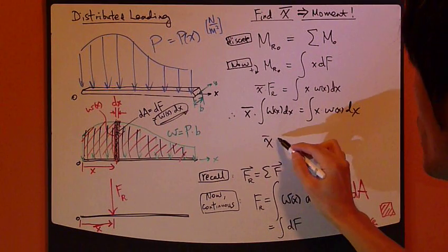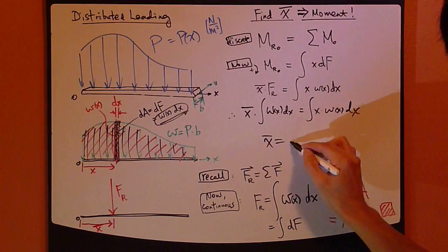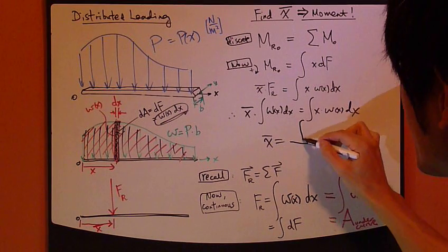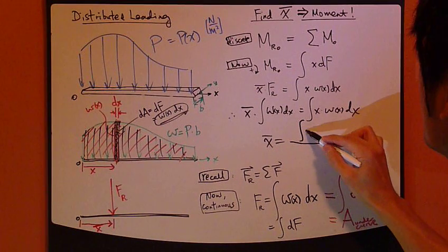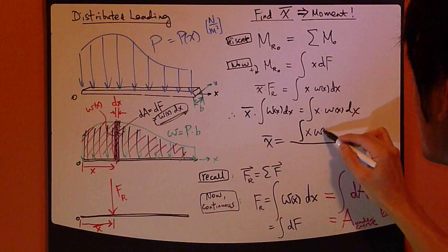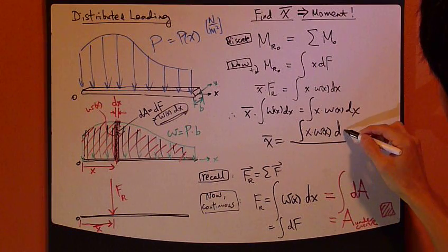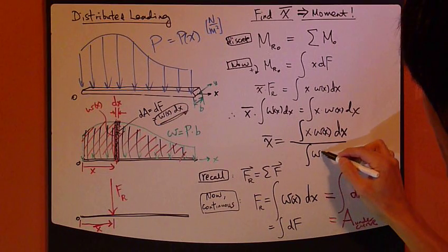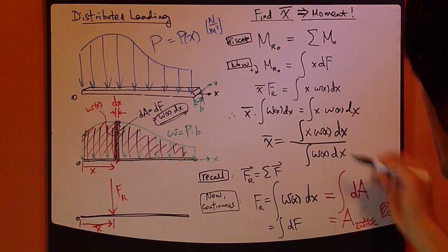I can just do some very quick rearrangement to find what we were trying to look for, X bar. Which is integral of X times W(x) with respect to dx, divided by integral of W(x)dx. That's it.